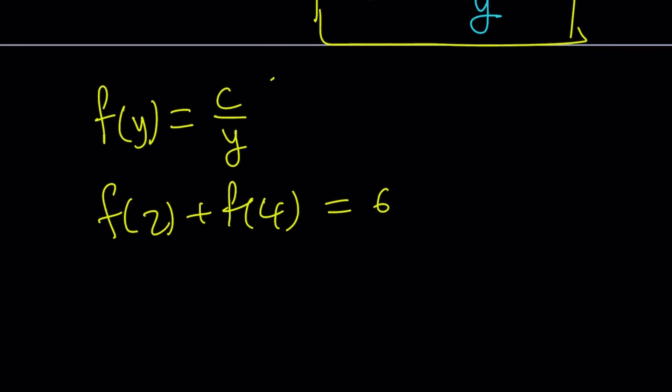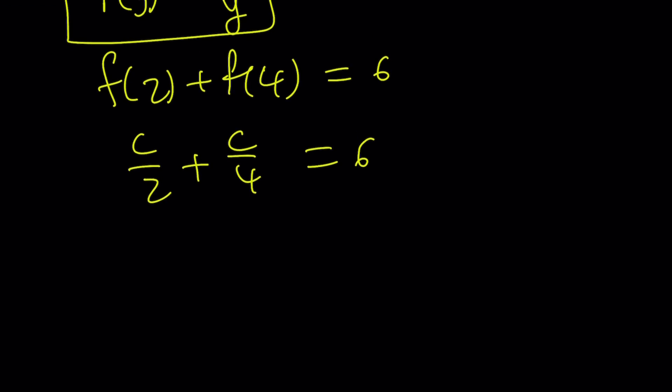Now, let's go ahead and use this definition. What is f(2)? c over 2. What is f(4)? c over 4. And their sum is 6. This is like a linear equation. You learn this one like 7th grade. Make a common denominator. 3c over 4 is equal to 6. I like to cross cancel. And from here, you get c equals 8.